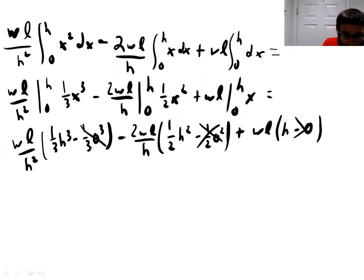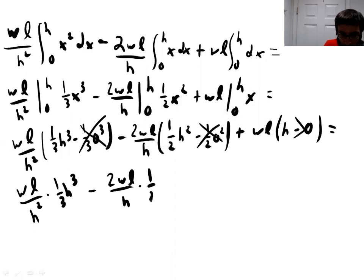This 0 is going to go away. And so what are we left with here? Well, we're left with WL over H squared times 1 third H cubed minus 2 WL over H times 1 half H squared plus WLH. So here we have an H cubed divided by H squared. That's just going to get us an H on top. So it's going to get us WLH over 3.